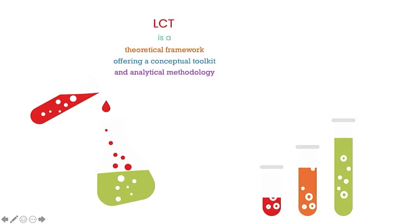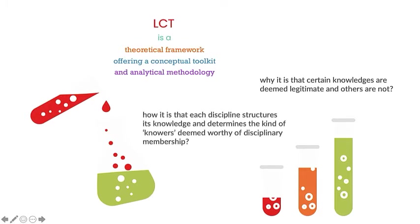LCT is a theoretical framework offering a conceptual toolkit and analytical methodology that asks the important question why is it that certain knowledges are legitimated and others are not? And also how is it that each discipline structures its knowledge and determines the kind of knower deemed worthy of disciplinary membership? It provides a realist understanding that acknowledges the social character of knowledge.